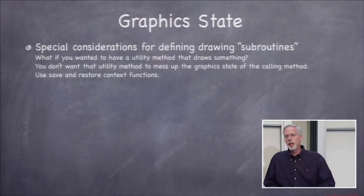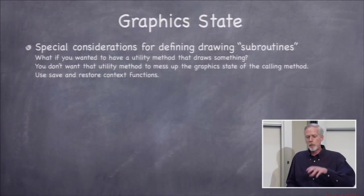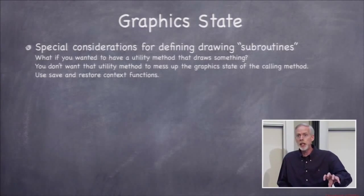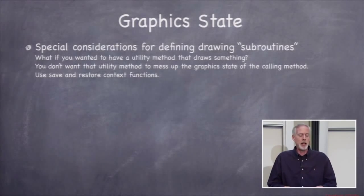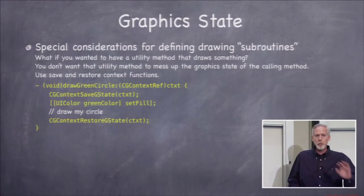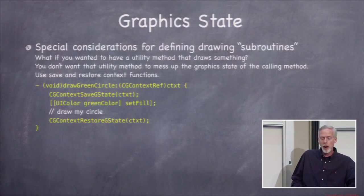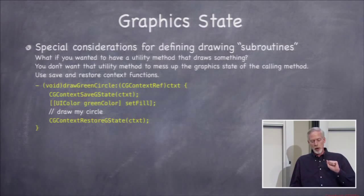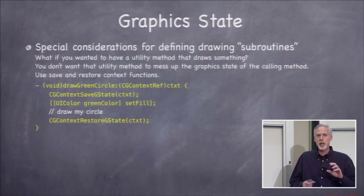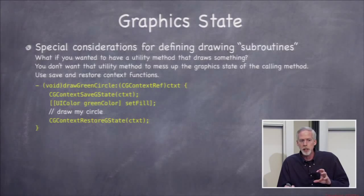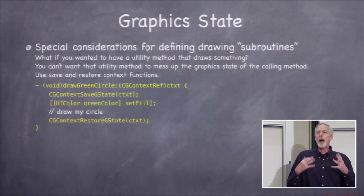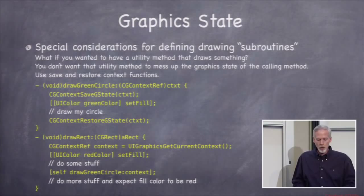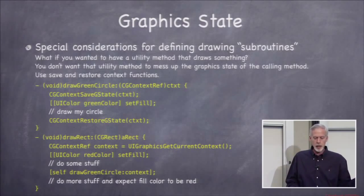If you're setting fill colors, clipping, and other state inside a subroutine, when you return from the subroutine those settings may still be active — and that would be bad. So you want to push and pop your graphics state: CGContextSaveGState saves everything — fill colors, clipping regions — and CGContextRestoreGState restores it. You go do your clipping and filling, then restore, and you're back to the previous state.